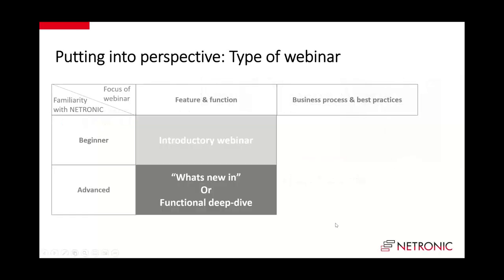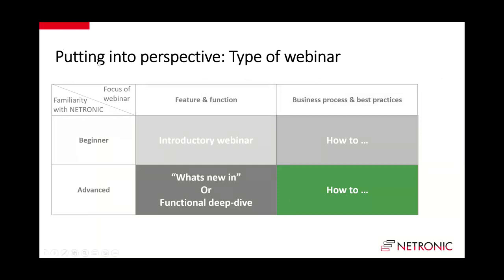This webinar today — you have now seen this matrix a couple of times. I'm trying to give you an indication of what type of webinar this is. The focus today is not talking about a particular feature or function, but putting this into perspective of a business process and some best — and maybe also worst — practices when it comes to Business Central. This is definitely not an introductory webinar, but looks at more advanced stuff. We started to provide this with the VAPS, the Visual Advanced Production Scheduler for Microsoft Dynamics 365 Business Central.